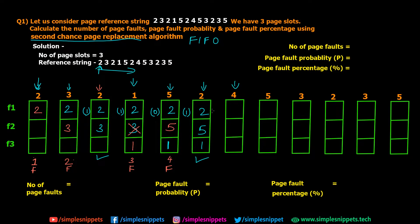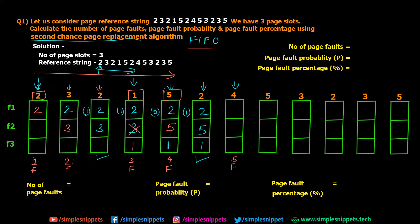Page 4 is requested. We have pages 2, 5, and 1 and all slots are full, so this is the 5th page fault. Applying FIFO: page 2 came in first but its reference bit is 1, so it gets a second chance and is not replaced. We compare pages 5 and 1 — page 1 came in before page 5, so page 1 is removed and page 4 is added. Pages 2 and 5 remain. The reference bit of page 2 is now reset to 0 since it used its second chance.